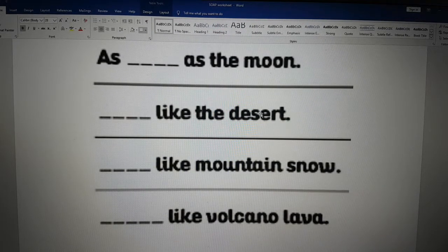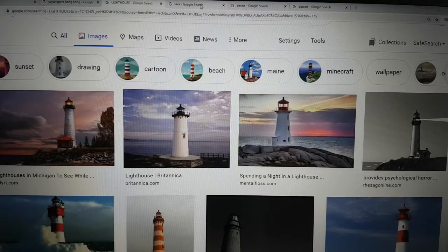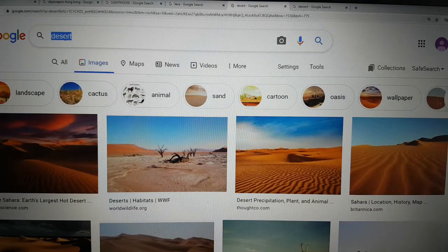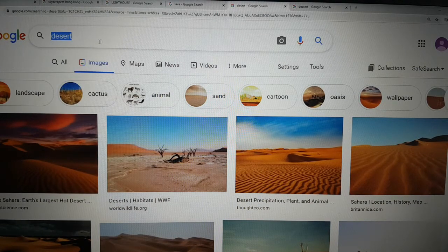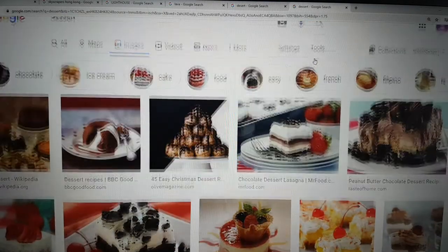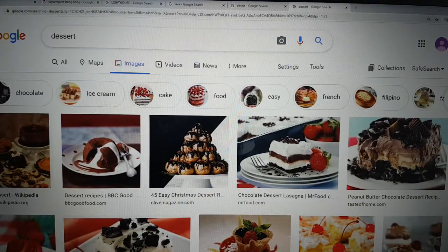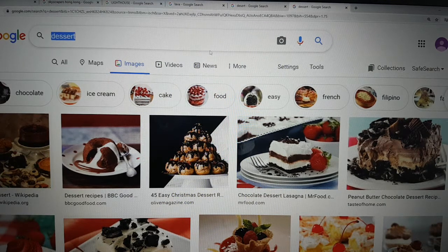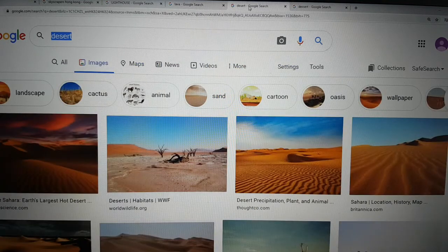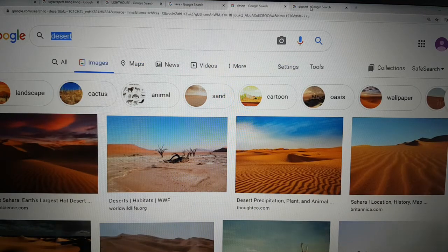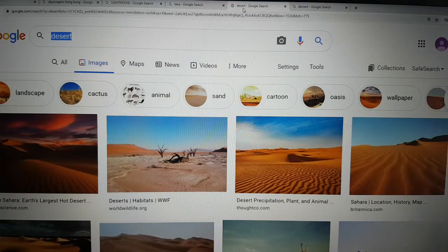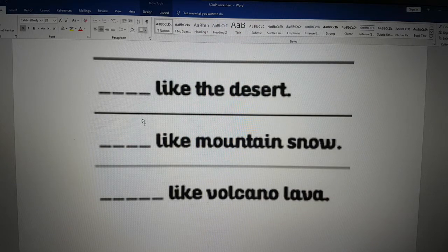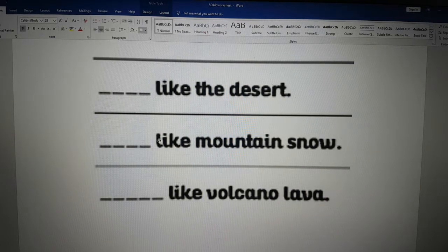Now this word here, D-E-S-E-R-T is the desert. This is the desert. Now do not confuse desert, D-E-S-E-R-T, with dessert. One S makes a big difference. With two S's, D-E-S-S-E-R-T, this is dessert. Say it together: desert, dessert.